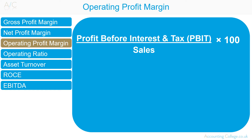Gross profit margin only includes cost of sales. A point to consider when comparing operating profit margin to gross profit margin is, if an organisation notices a large reduction between gross profit margin and operating profit margin figures, this would indicate that the organisation is more efficient in creating and selling its products than it is at managing its day-to-day costs.